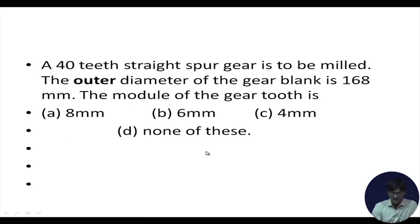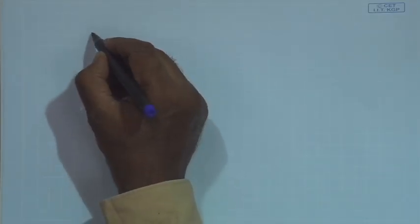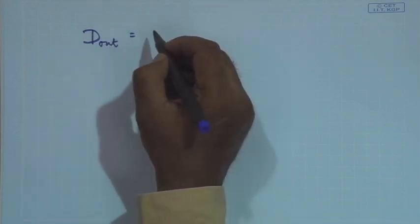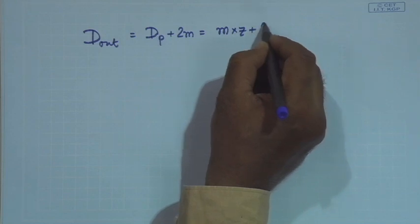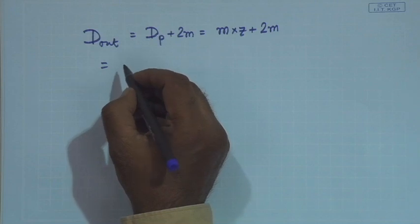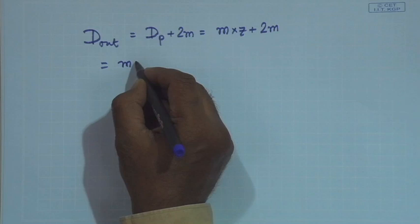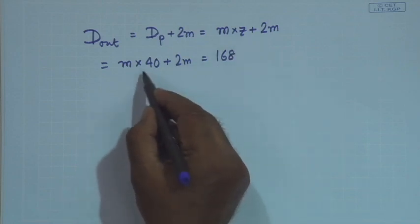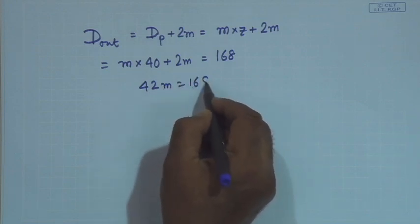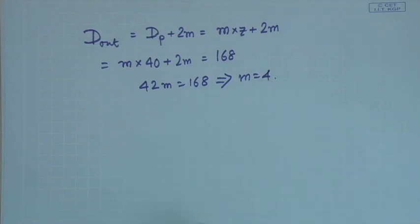A 40-teeth straight spur gear is to be milled. The outer diameter is 168 mm. The module of the gear tooth is found as follows: outer diameter = m(z + 2) = m × (40 + 2) = 42m = 168 mm. Therefore m = 168/42 = 4. So the module is 4.